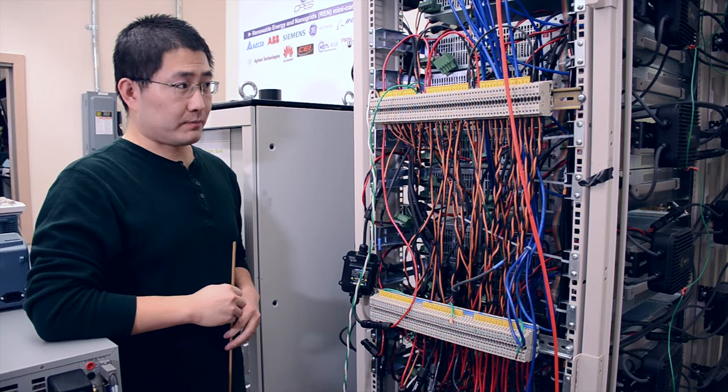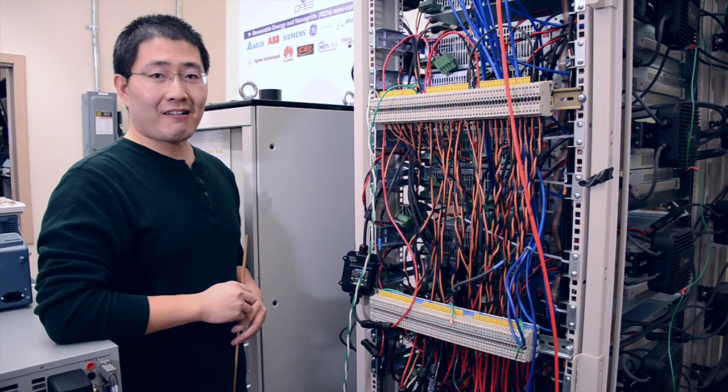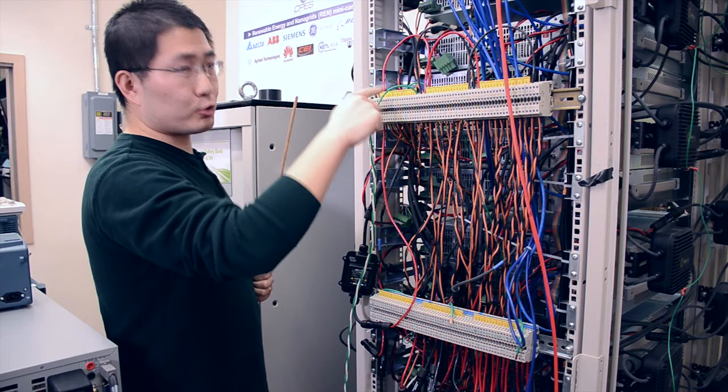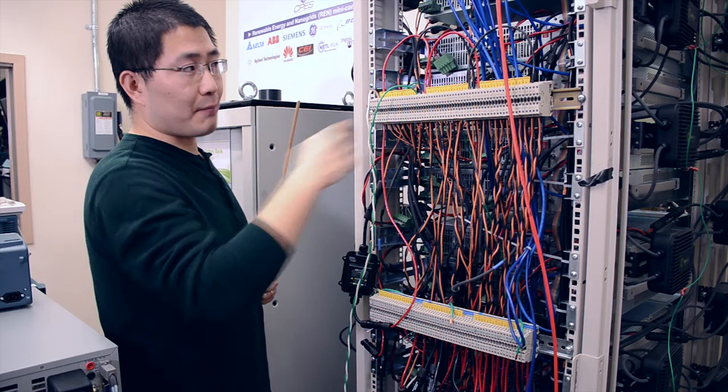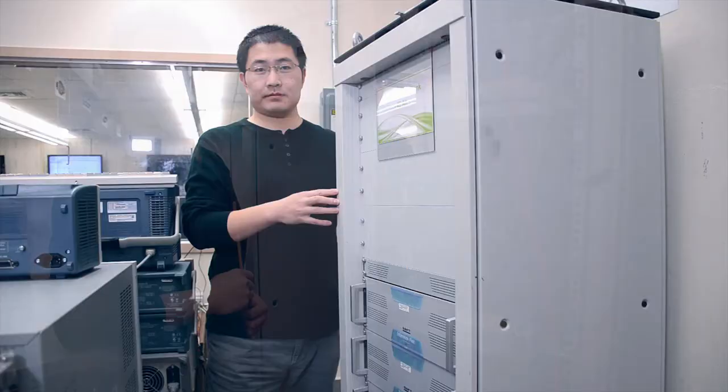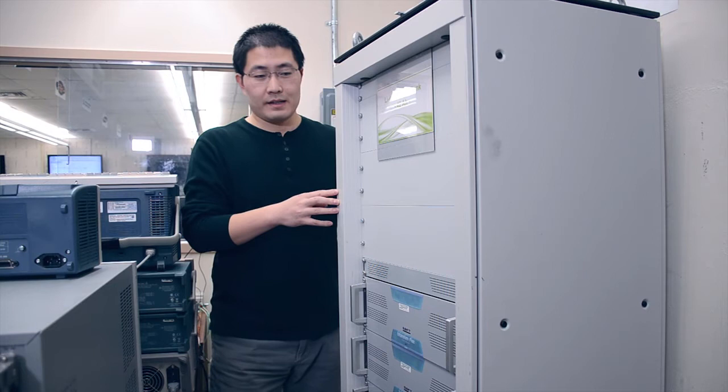To install all the 30 panels into the DC bus system, a DIN rail connector is used to easily configure the parallel and series connections. For example, in our system here, we have three strings. Every string has 10 panels in series connected, and the three strings are paralleled through the connections, the red and black wires.